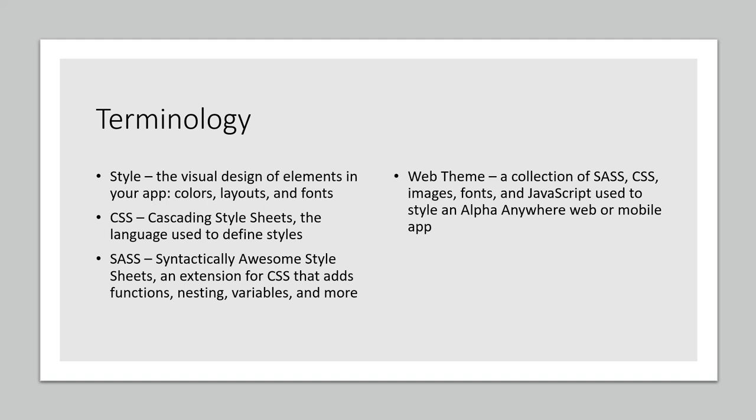There are two ways you can style your app. You can use CSS — cascading style sheets — which is the language used to define styles and is native to all web browsers. But SASS — syntactically awesome style sheets — is an extension for CSS that adds really powerful features like functions, nesting, variables, and mix-ins. It's very powerful and makes building and maintaining a theme much easier to work with than raw CSS for defining the look of your application.